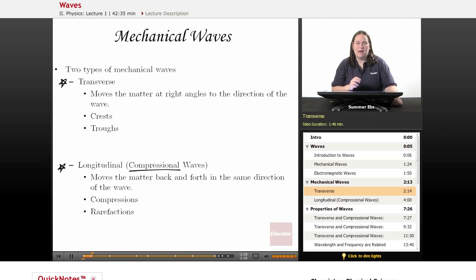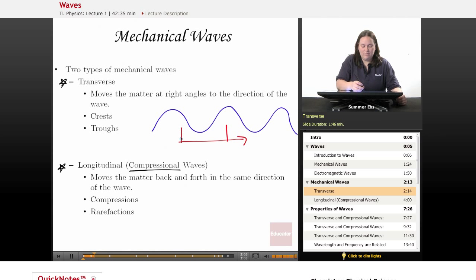Transverse waves move the matter at right angles to the direction of the wave. It moves them up and down, like ocean waves. If the wave moves to the right, it flows up and down as it moves right. From math class, a perpendicular line is at a right angle—straight up and down and straight to the side. These waves move perpendicular to the direction of the wave.